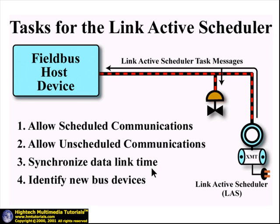Next, the Link Active Scheduler must be capable of dynamically identifying new devices as they are placed onto the bus. Once a new device is identified, a configuration tool can be used for automatic address assignment and control configuration. This is done without hardware dip switch or jumper settings. All hardware and software settings are made over the bus using client-server type data communications. Thus, we have a true plug-and-play type operation.